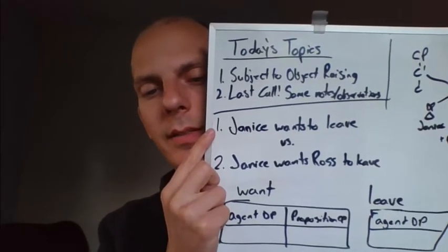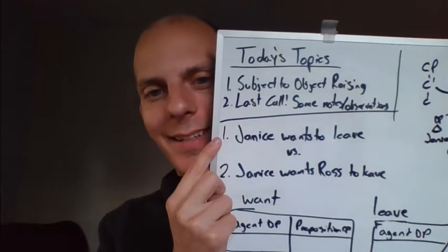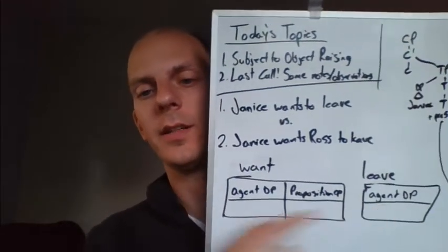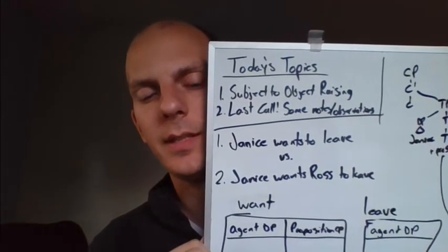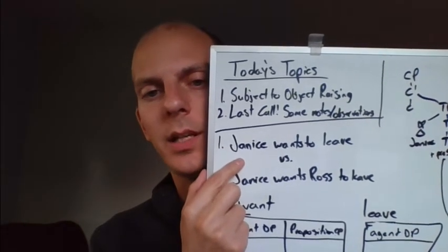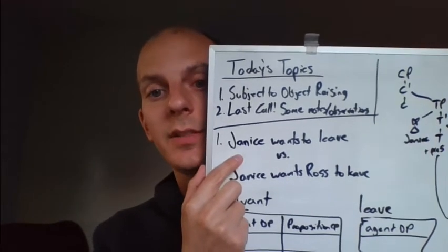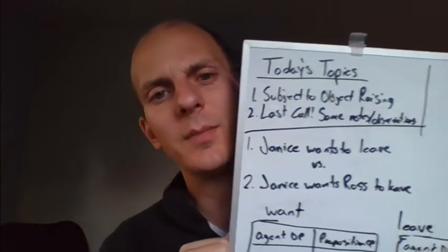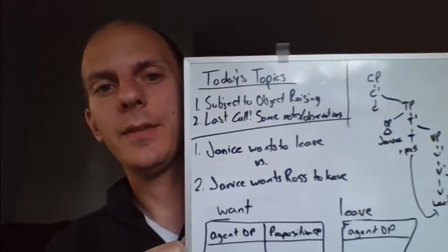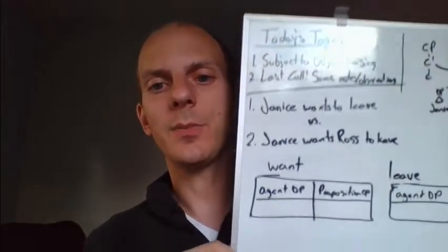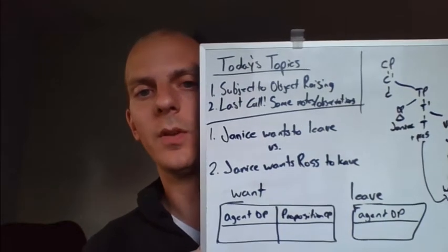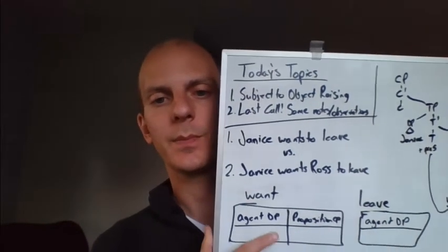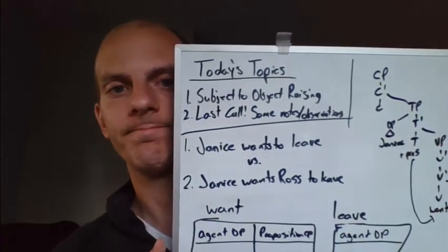The interesting part with this first sentence is that there are only two arguments. We know from the theta grids that there are three theta roles to be assigned, but there are only two arguments. Janice is an obvious one, and there's also the proposition 'to leave.' So if we were filling out this theta grid: who is doing the wanting? Janice. Janice is pretty clearly doing the wanting here.